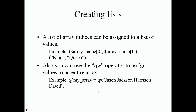Instead of using parentheses, quotation marks, and commas to assign values, we can use qw followed by either parentheses or forward slashes. I personally like to use parentheses to keep it consistent with functions. We don't need double quotation marks on strings — values are just separated by spaces. So I can put Jason, Jackson, Harrison, and even include a number like 44.